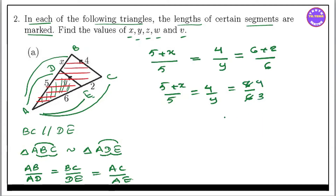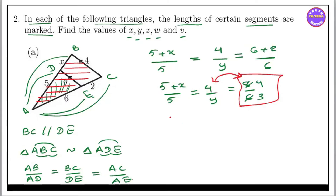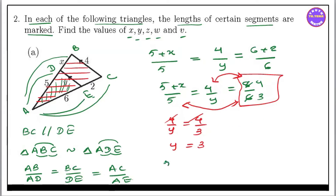We have AB by AD: 5 plus x by 5. Four divided gives y equal to 3. That's right. Now we're going to do it right now: 5 plus x by 5 equal to 4 by 3.